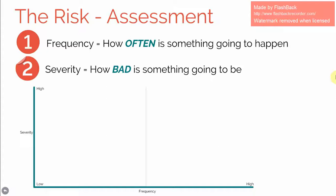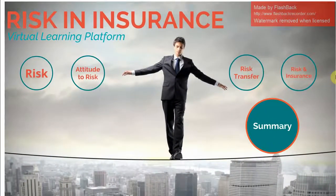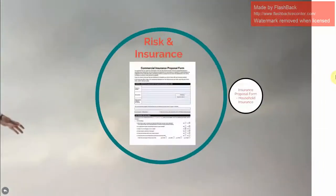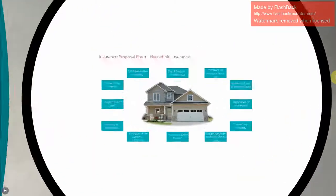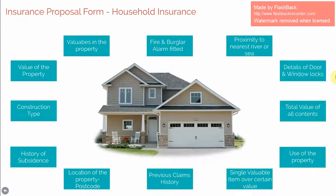In order to better understand a risk, the insurer will require a lot of information from the customer. A proposal form is usually used to gather all the details for risk assessment. Let's look at some of the details that get captured in the proposal form for a household contents policy.